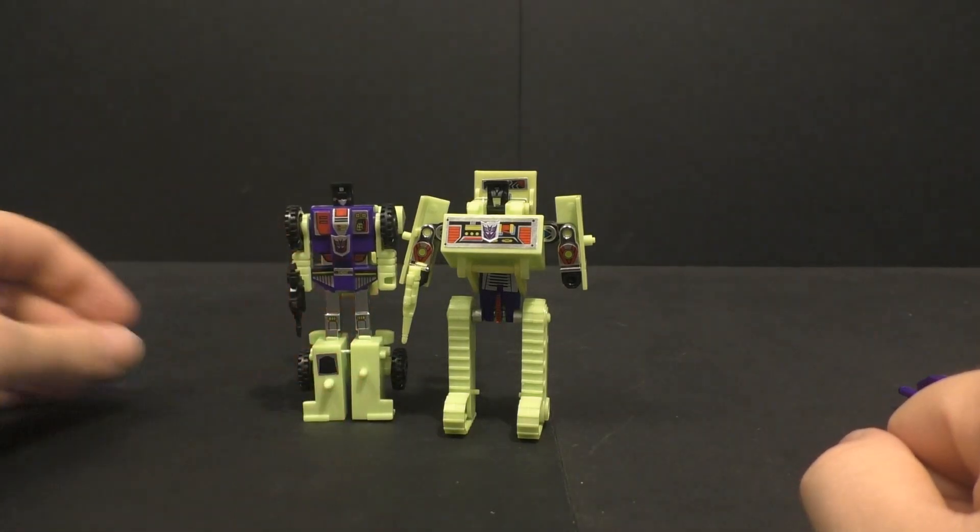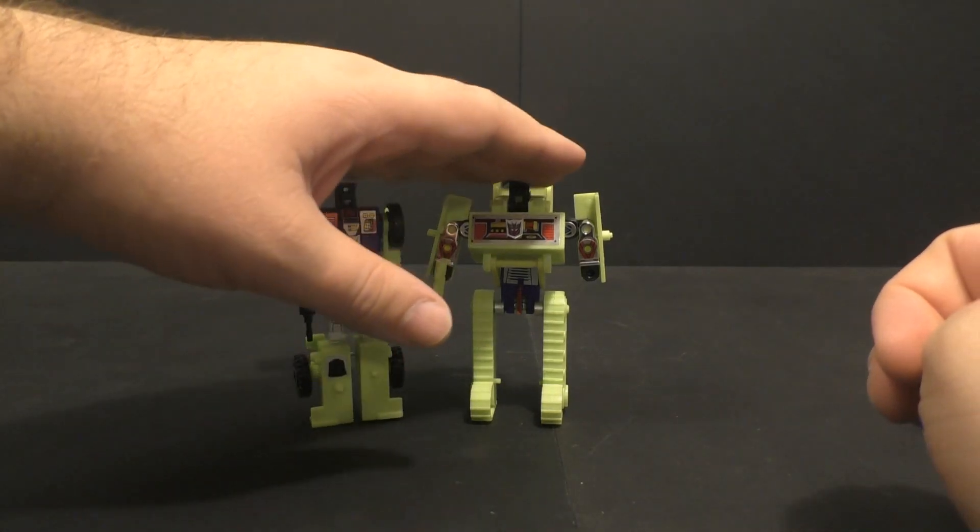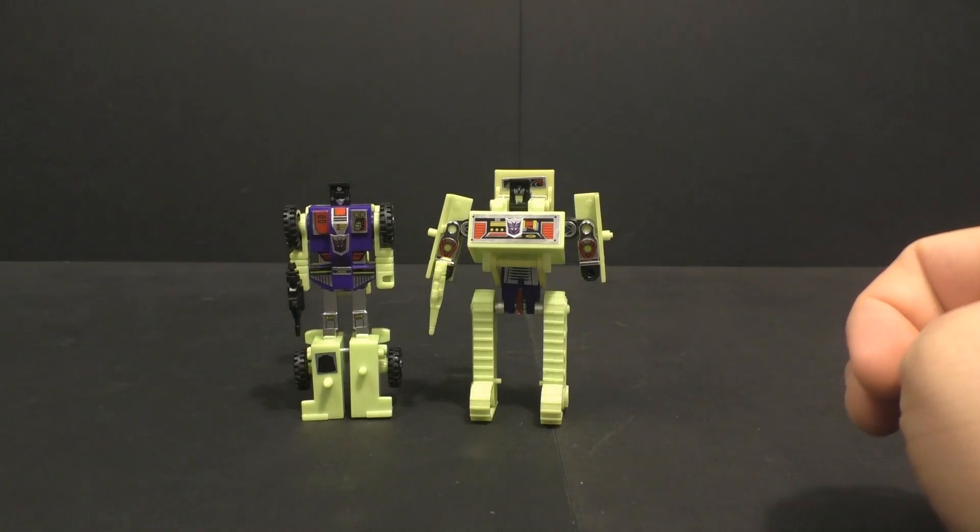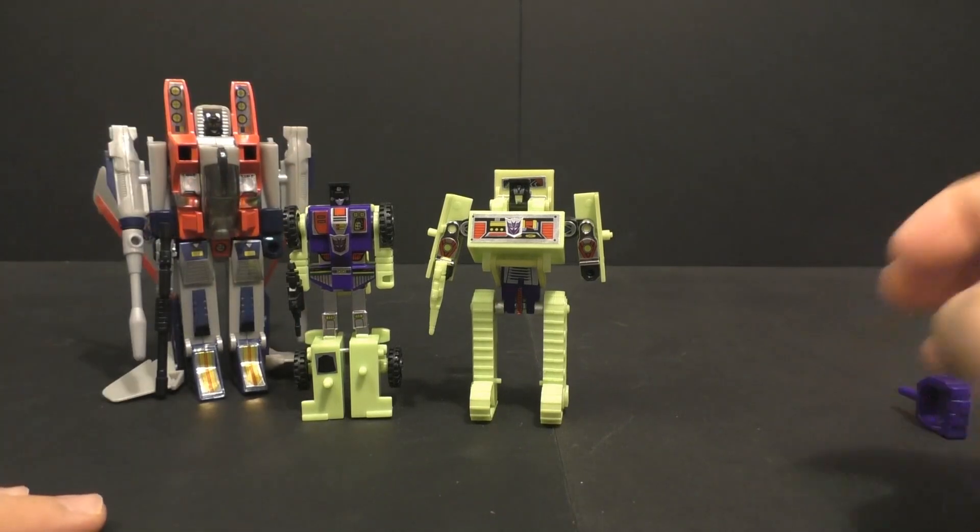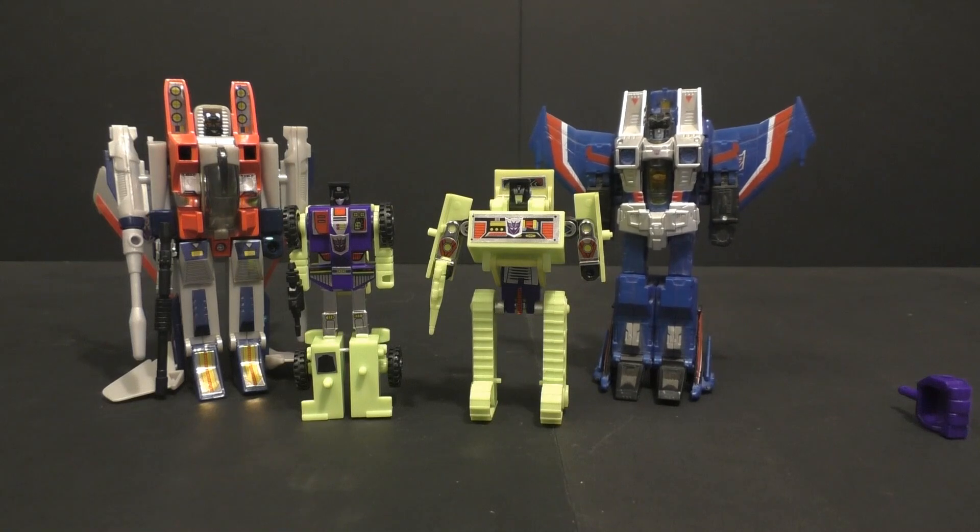Comparison. Here he is with Scrapper. So you see they're about the same size height-wise. He seems a little bit wider. And G1 Starscream. And a Seeker. Or Chug Seeker.